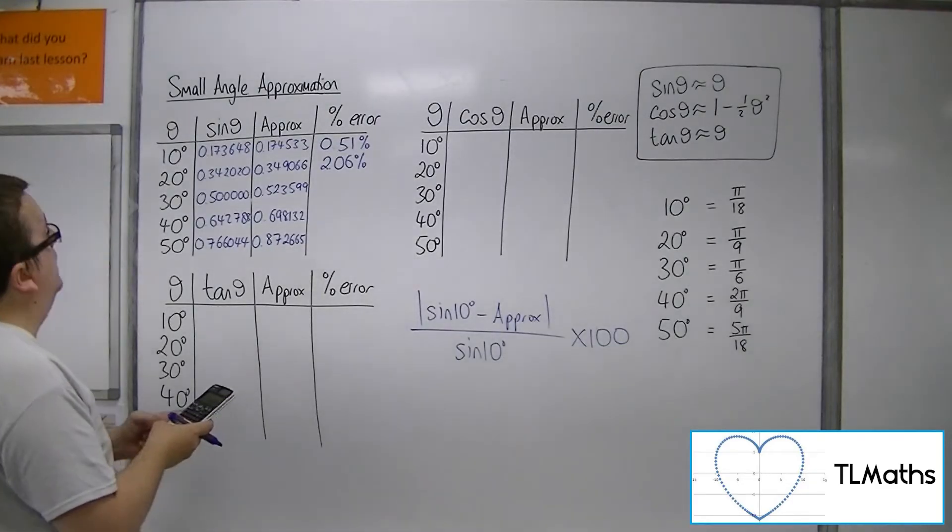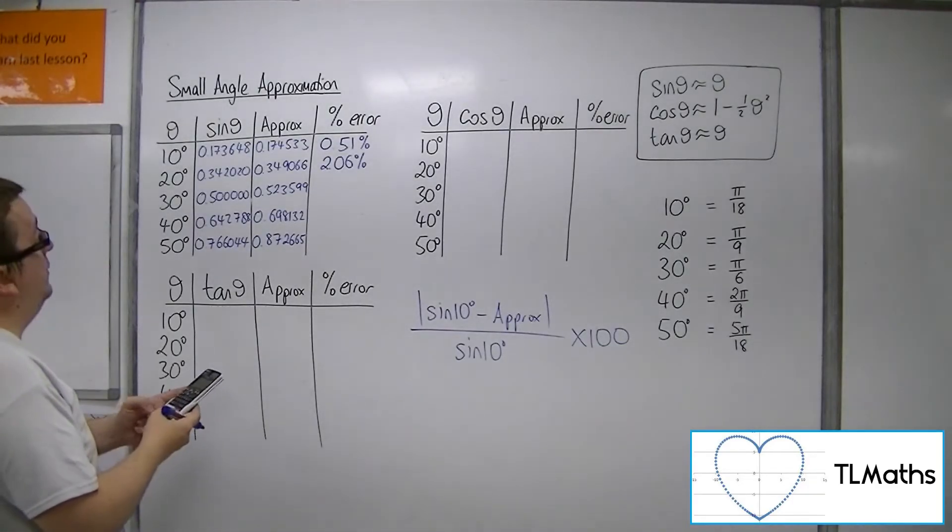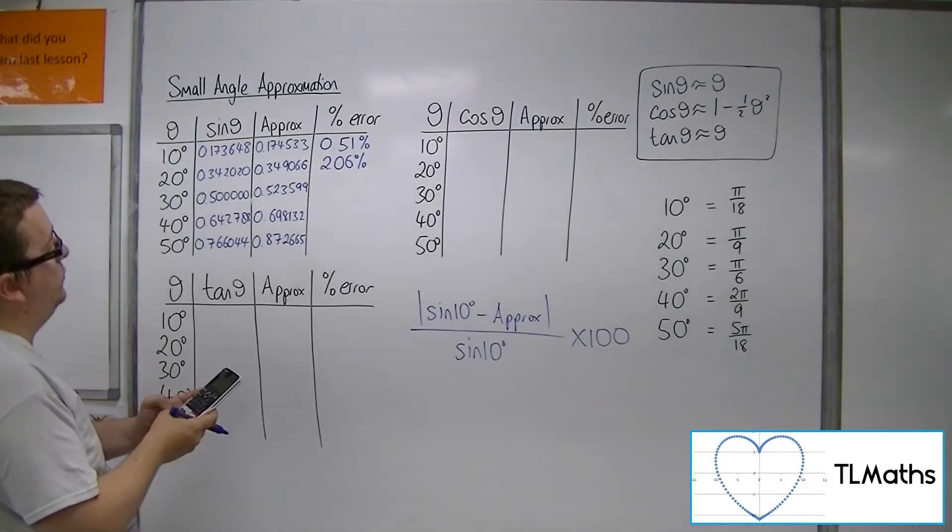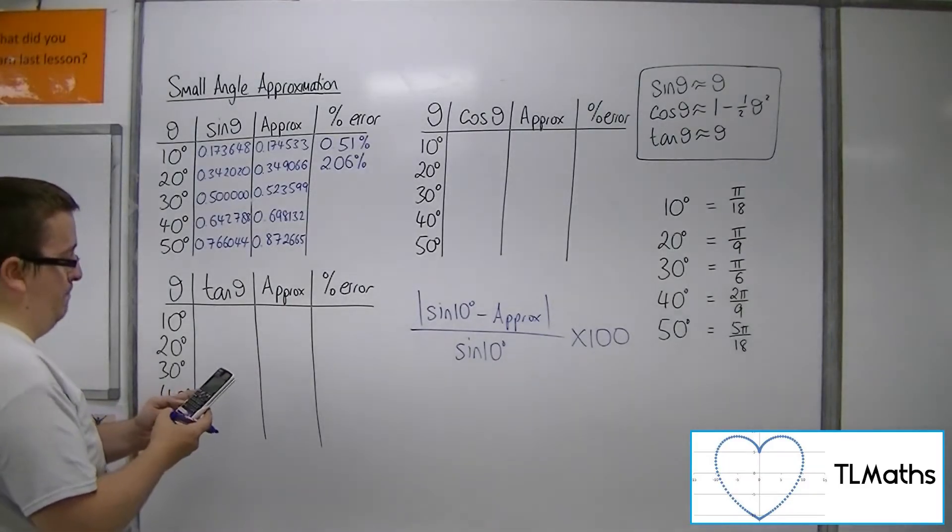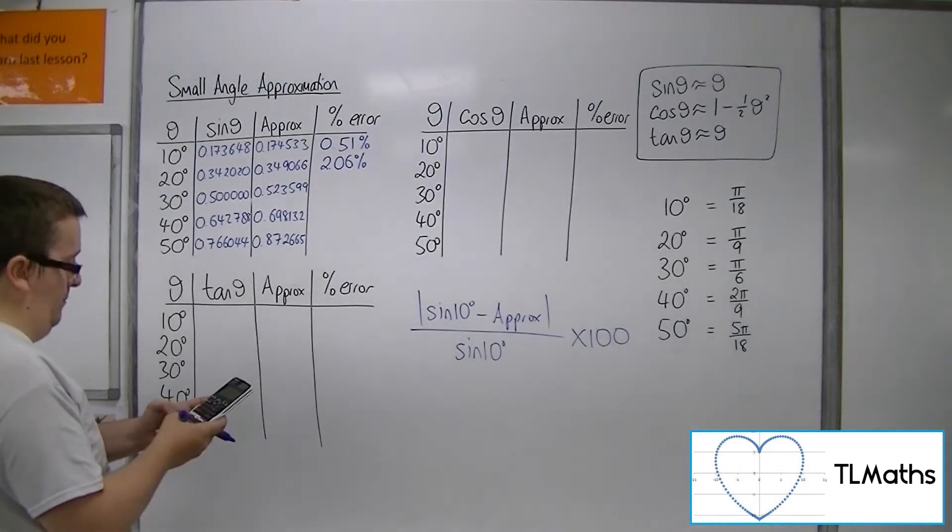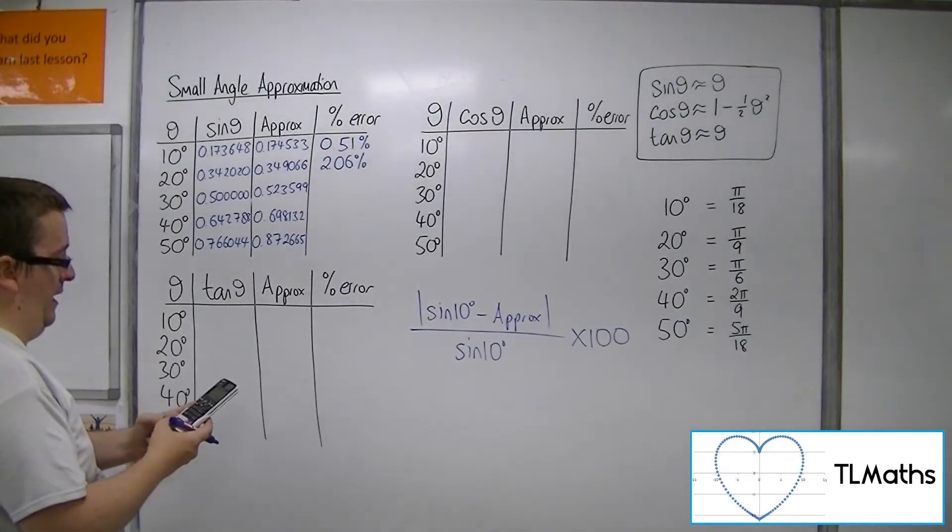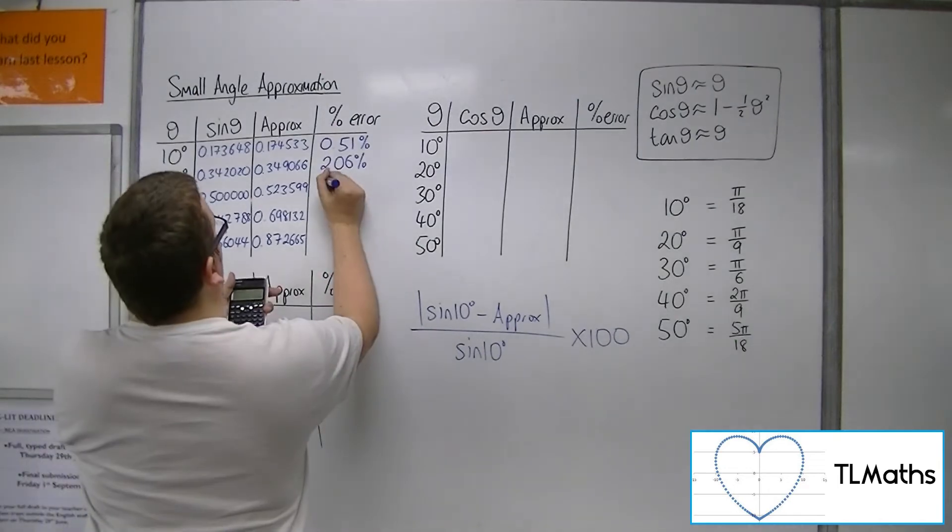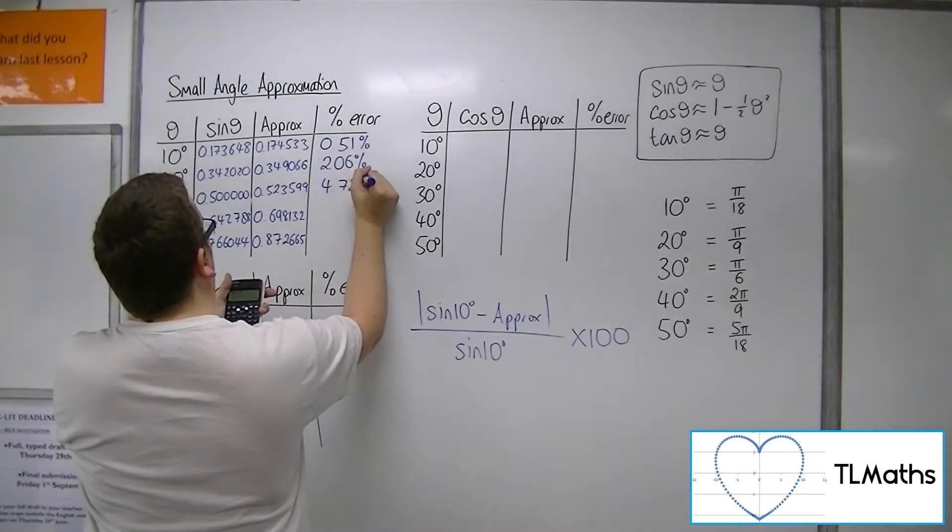If I do the next one, 0.5, take away 0.523599, times that by minus 1 to make it positive. Divide by 0.5, times by 100, and I get 4.72%.